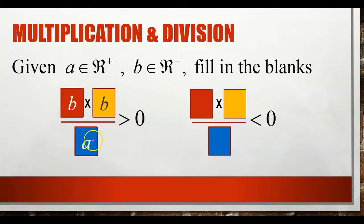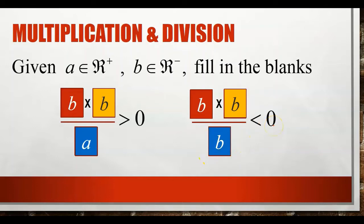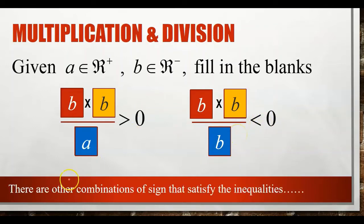B times B divided by A: negative times negative gives positive, and positive divided by positive gives positive. For the second statement, A times B divided by A: positive times negative gives negative, and negative divided by positive gives negative, which is less than 0. Or B times B divided by B: B times B gives positive, and positive divided by negative gives a negative number less than 0. So there are many combinations of signs that satisfy the inequalities.